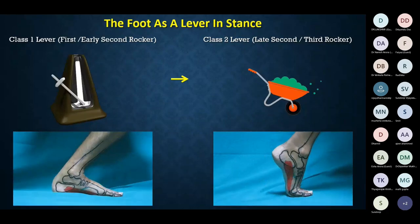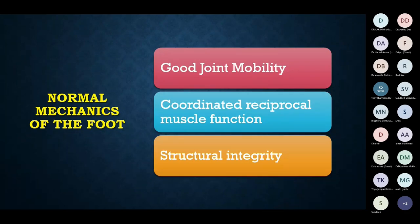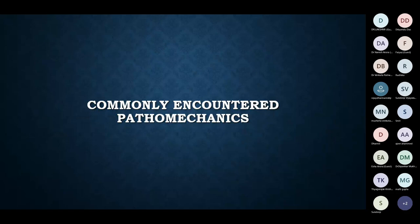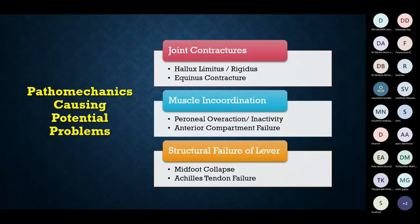To summarize normal mechanics of the foot, you need three things: good joint mobility, coordinated eccentric and concentric muscle contraction, and structural integrity. If any of these three are damaged, you get pathomechanics. The common types are: abnormal joint mobility such as joint contractures in the first MTP joint or ankle joint; incoordinated muscle action such as foot drop or peroneal dysfunction; and structural lever failure in the Achilles tendon or midfoot.